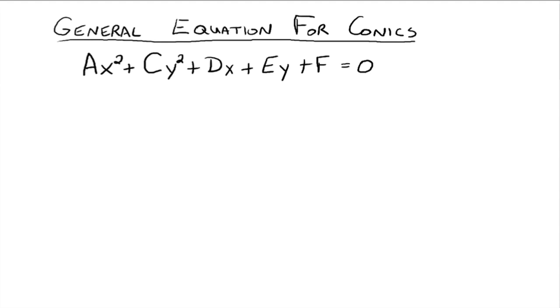a, c, d, e, and f are all real numbers. You'll notice that b is missing. b is actually the coefficient for xy, which we're not going to talk about in this particular discussion.